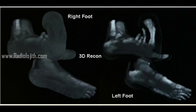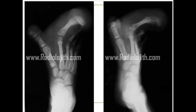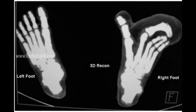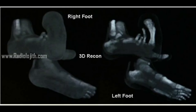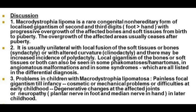Local gigantism of the bones, soft tissues, or both can also be seen in some phacomatoses, hamartomas, angiomatous malformations, and syndromes — all listed in the differential diagnosis. The clinical problems in children with macrodystrophia lipomatosa are many. A common one is painless focal gigantism in infancy that may concern parents. Cosmetic or mechanical difficulties may occur in early childhood, and degenerative changes at the affected joints or neuropathy may develop later.